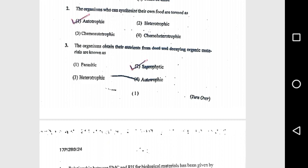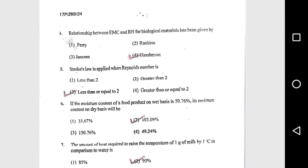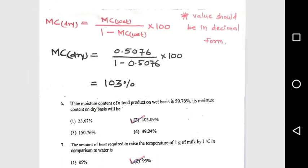Question 4: The relationship between EMC and RH for biological material has been given by Henderson. Question 5: Stokes law is applied when the Reynolds number is less than or equal to 2. Question 6: If the moisture content of a food product on wet weight basis is 50.76%, its moisture content on dry basis will be 103.09%.